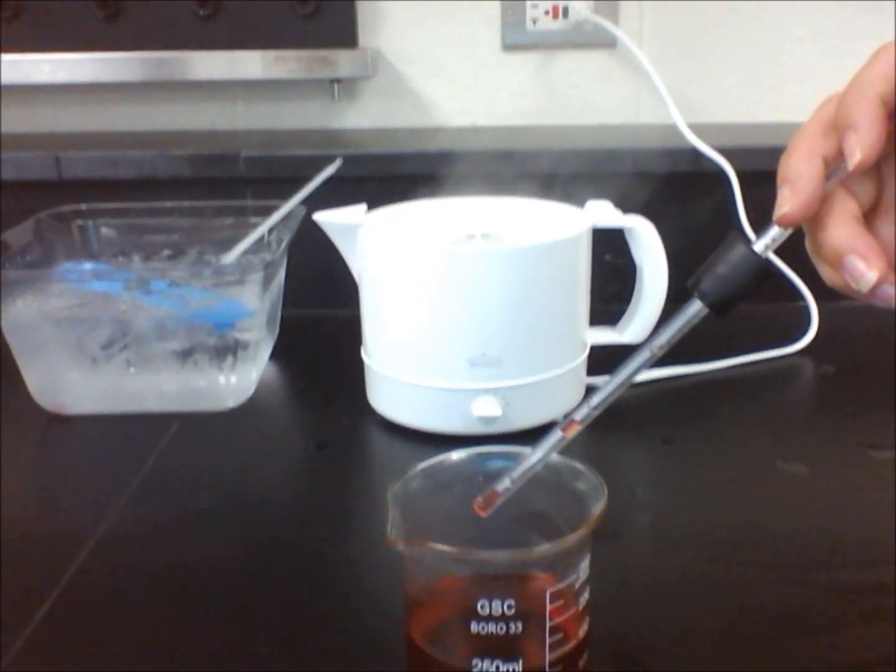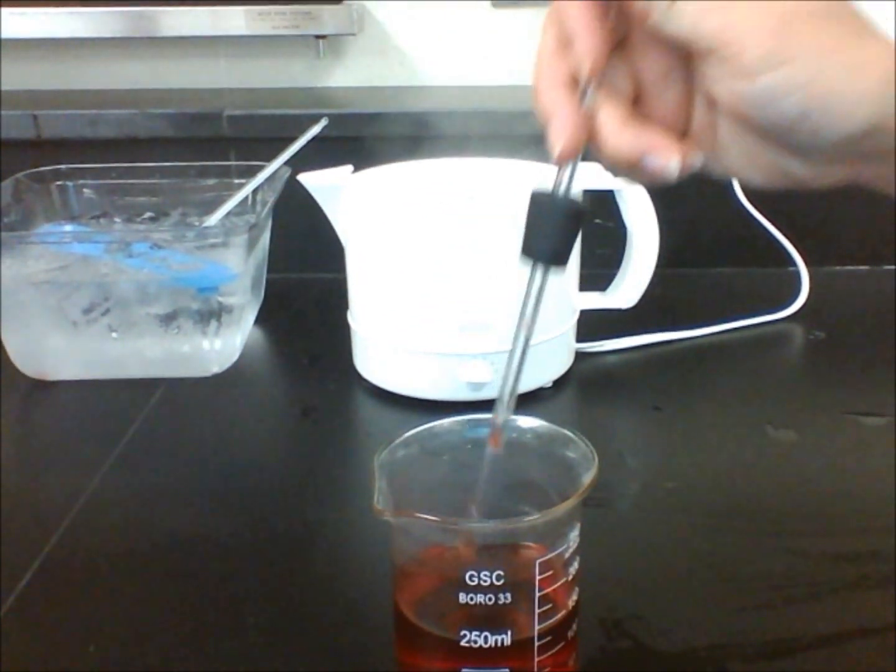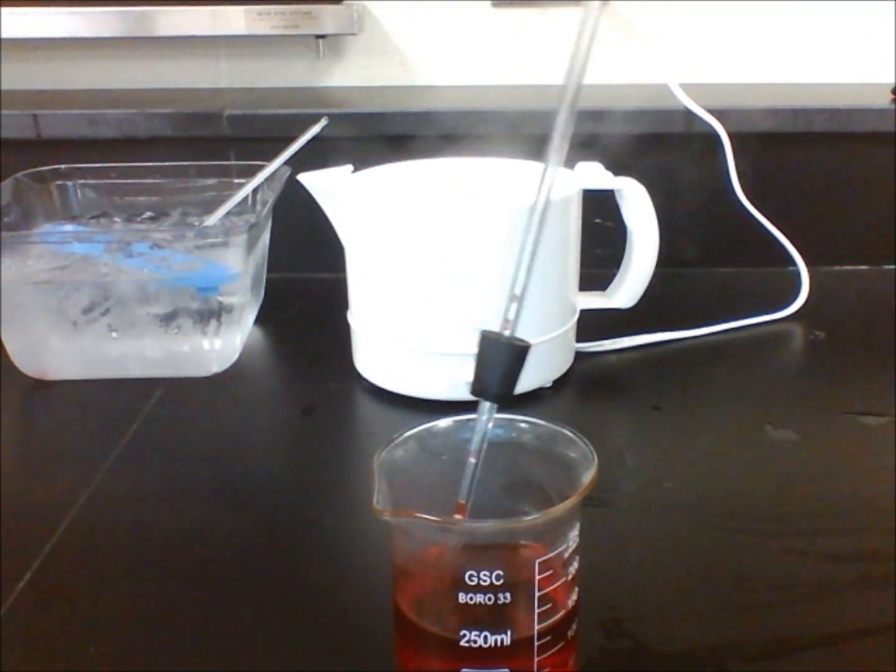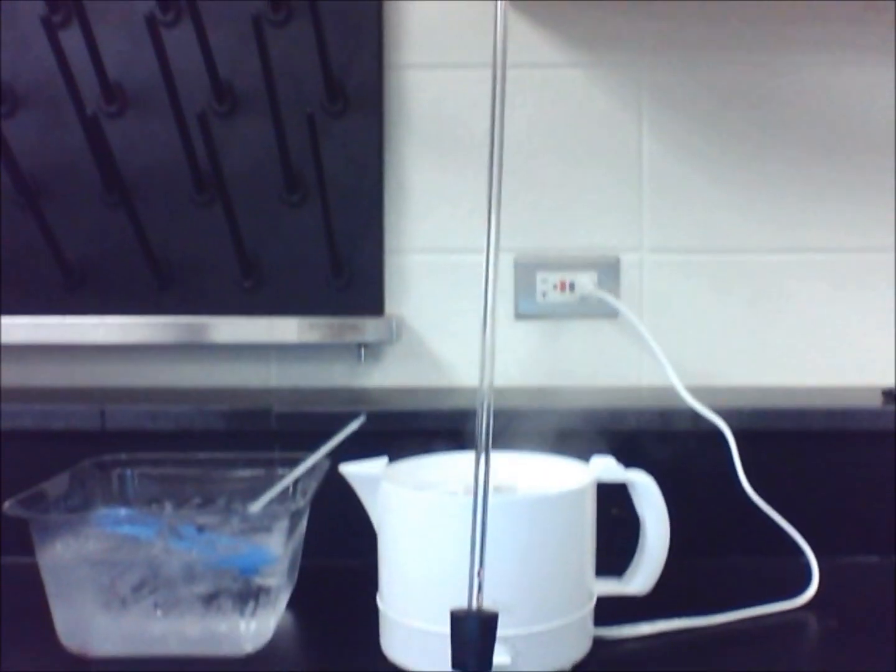In this experiment, we will take the same materials from Lab 5.1 to make an air thermometer. Instead of pouring colored water into the test tube, we will trap some of the liquid inside the plastic tubing only.